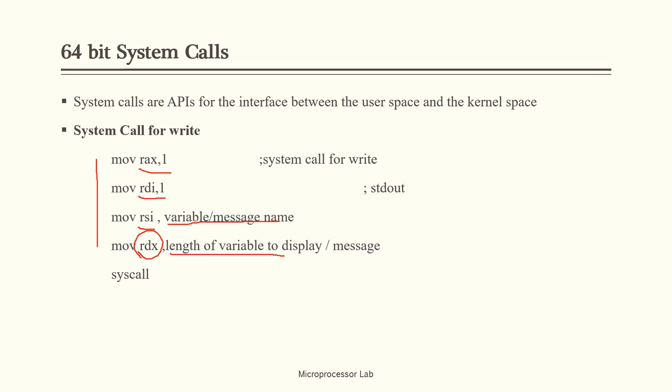To call this system call for write, we execute the syscall instruction. Due to this instruction, the system call is invoked and the message is displayed on the screen.